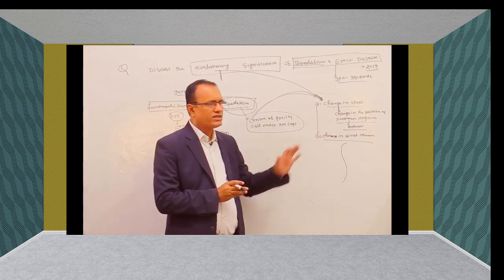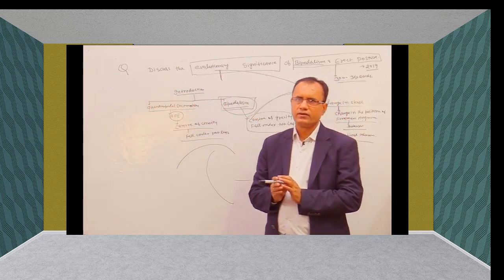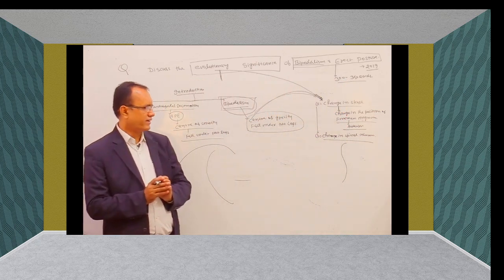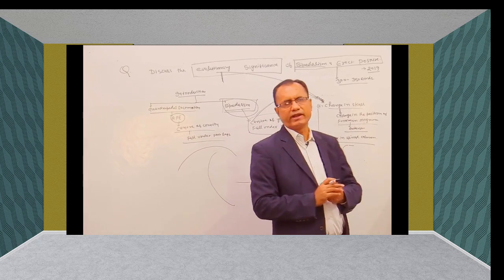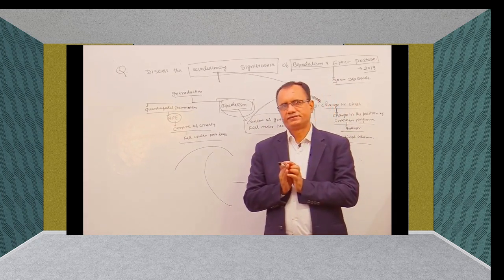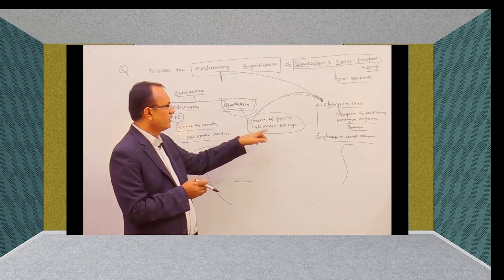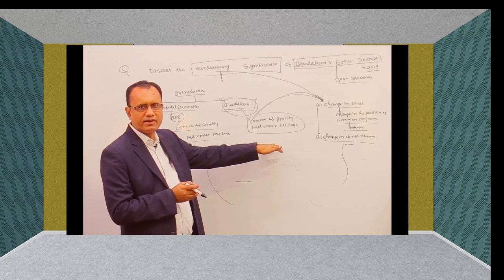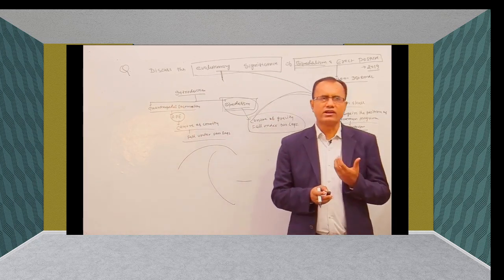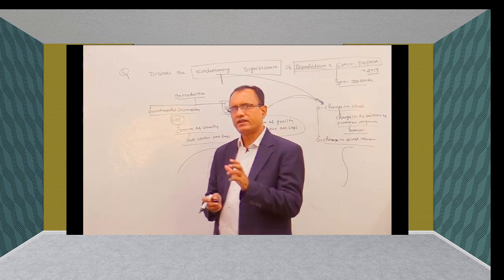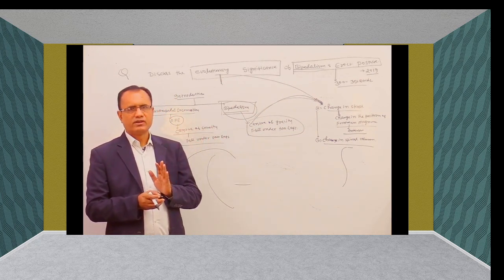In the spinal column, the four curves are: thoracic, lumbar, sacrum, and cervical. There was development of four curves — cervical, thoracic, lumbar, and sacrum. These played a very important role in changing the centre of gravity required under two legs. When there was development of four curves in the spinal column, that provided balancing for movement — for balanced movement through bipedalism.